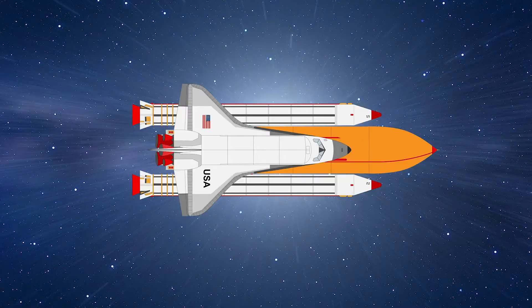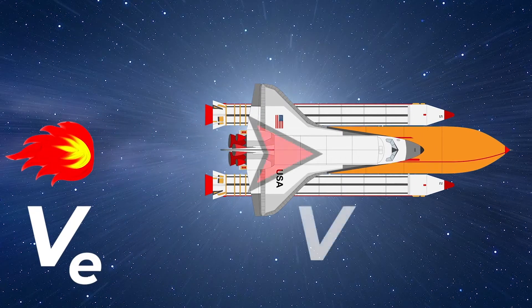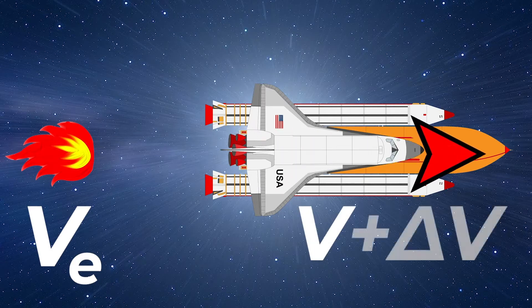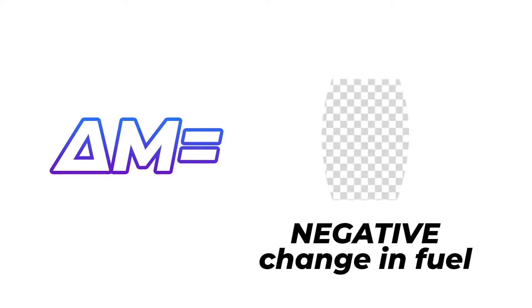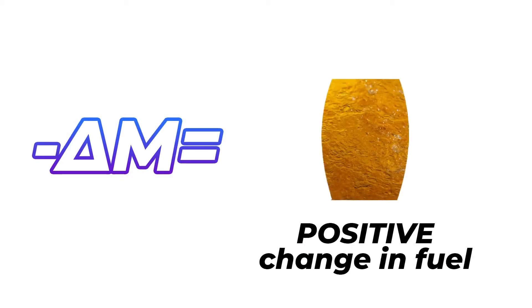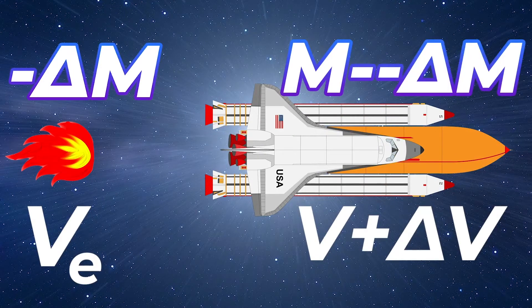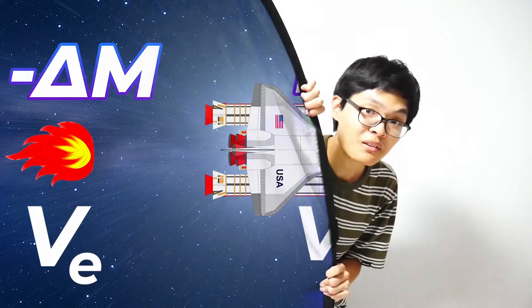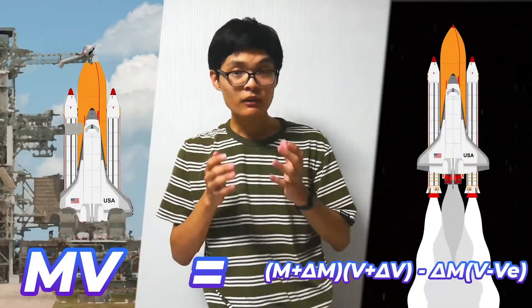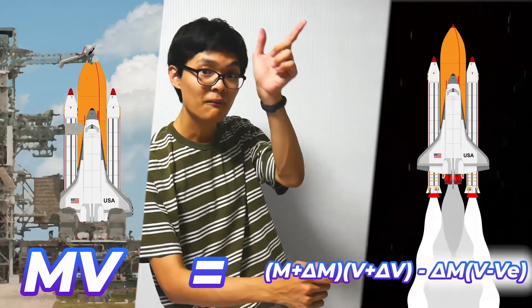So the fuel is expelled at the velocity V exhaust (velocity of exhaust), and it exerts that force on the rocket as well. The mass of the expelled fuel is negative delta M. Since delta M is the final mass minus the original mass, it's a negative number, so we add the negative sign to make it positive. Once we remove that from the original mass, the mass of the rocket becomes M plus delta M. According to the law of conservation of linear momentum, the total momentum of the system before the launch is equal to the total momentum during the launch, because the momentum of the fuel cancels out the momentum of the rocket.